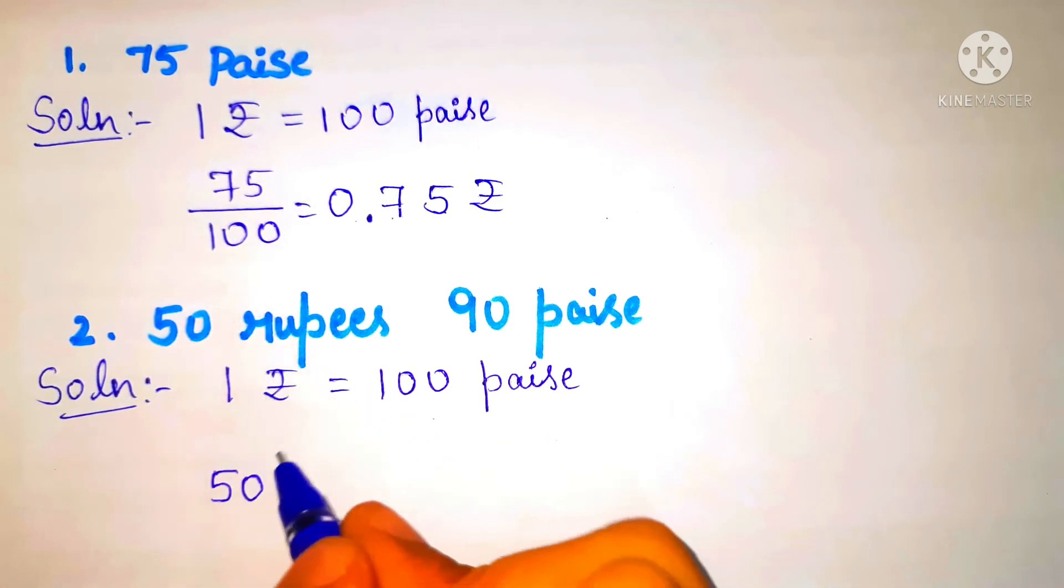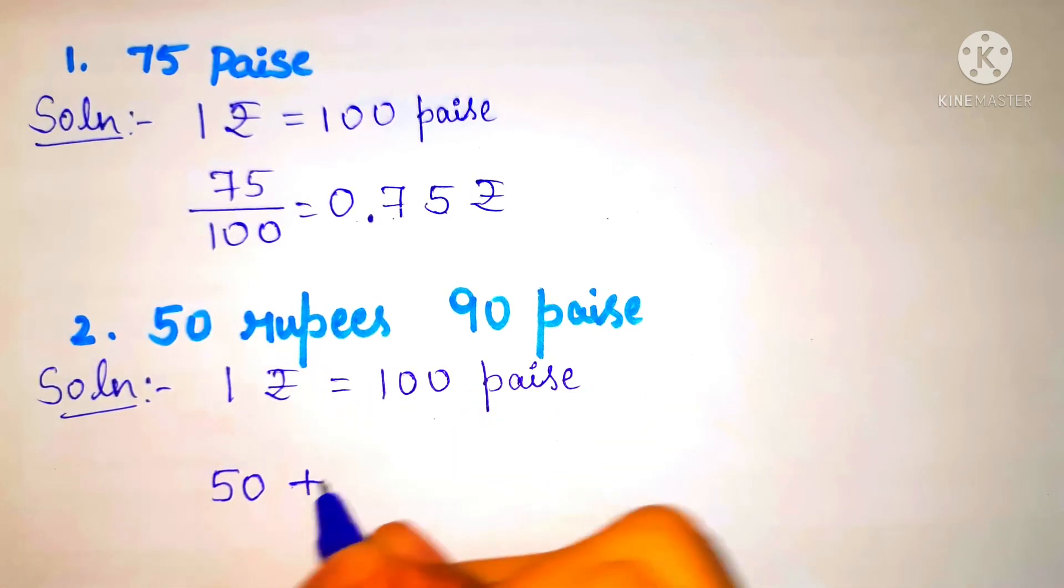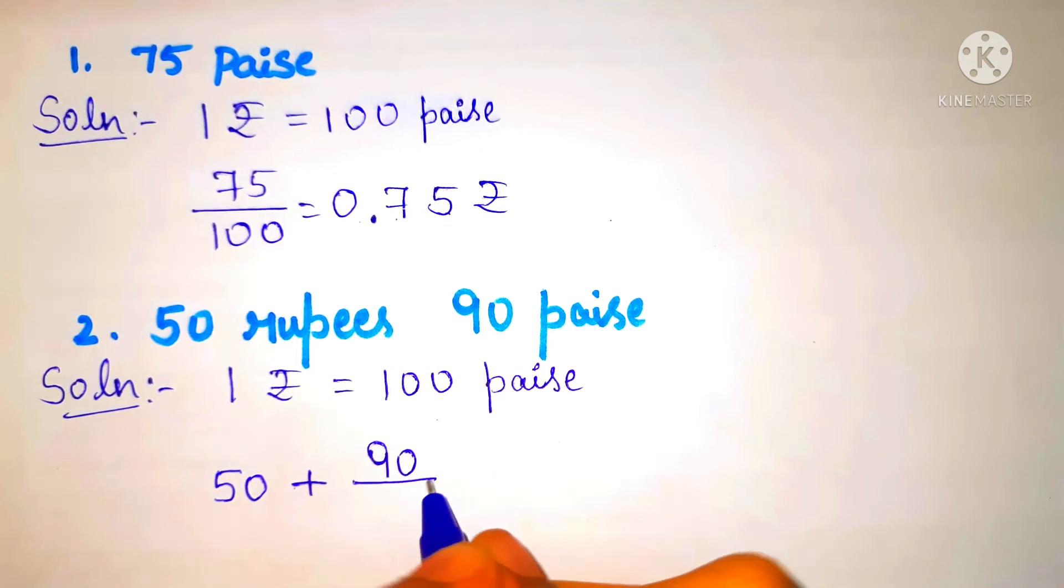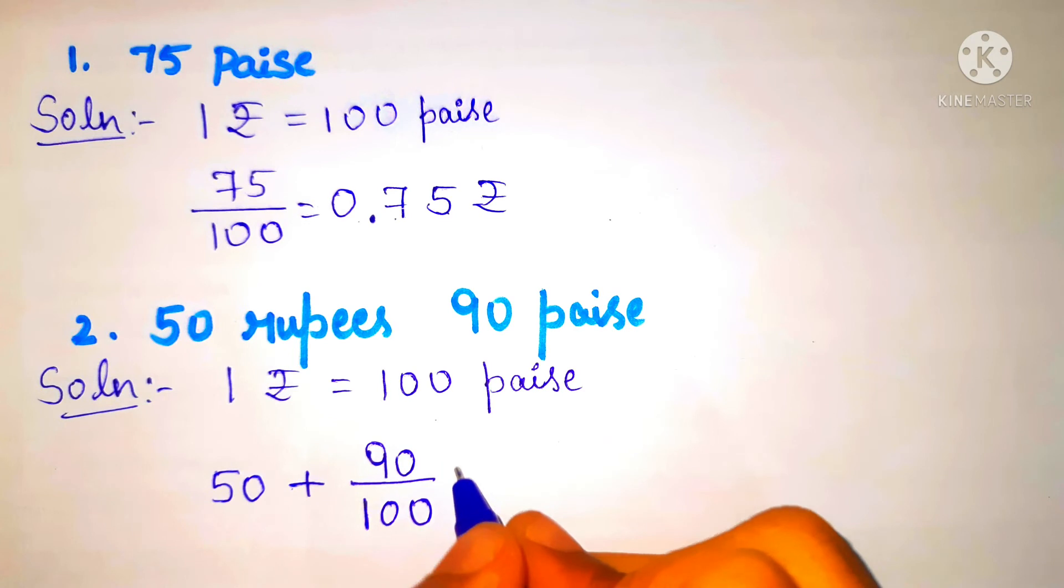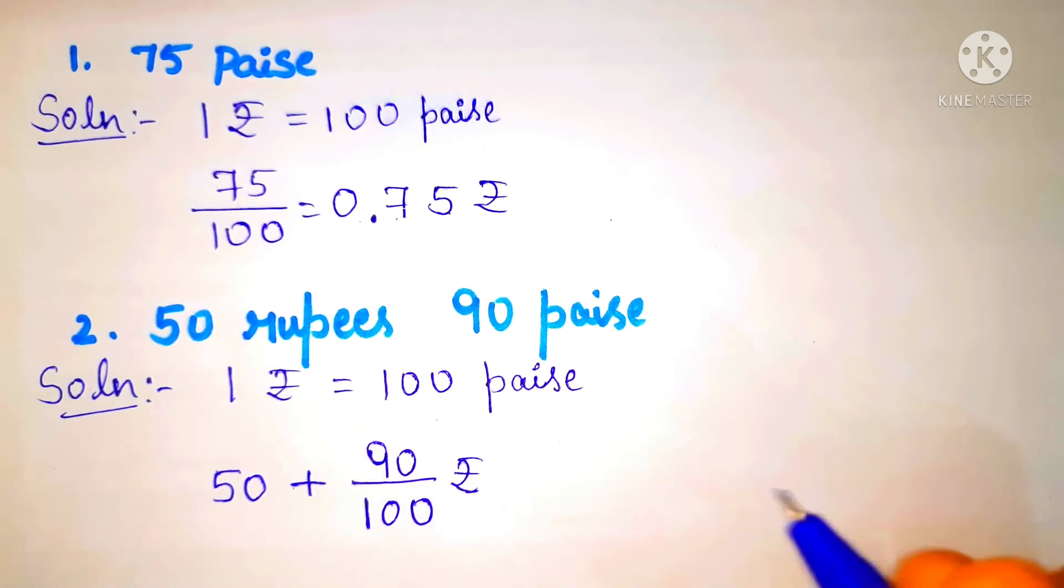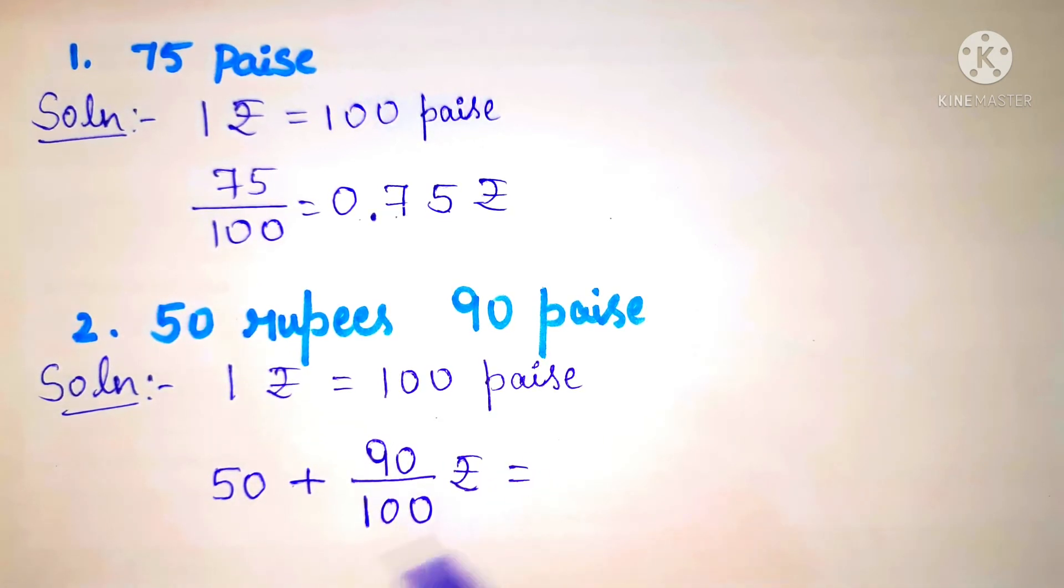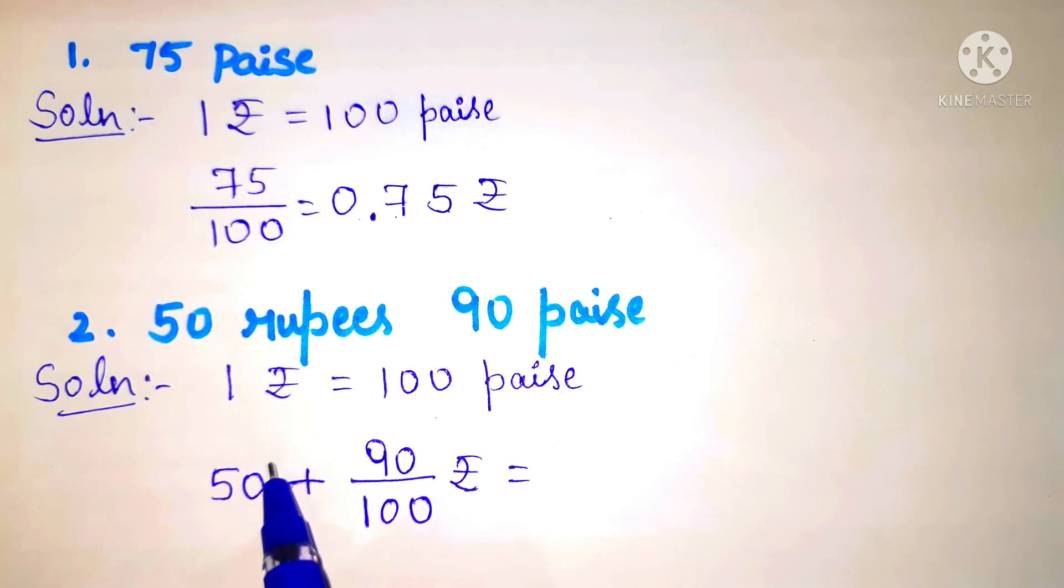So we take 50 as it is and add 90 by 100. We have to write the unit here which is rupees. We will consider 50 as the numerator and the denominator will be 1.